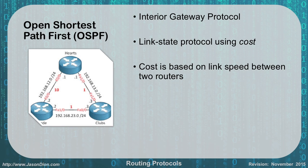Open Shortest Path First, OSPF, is our first link state protocol. It uses cost, which is determined based on the link speed between two routers. In this example, the cost is 10 between hearts and spades, and 1 between hearts and clubs, and 1 between spades and clubs. If I'm at hearts and want to get to spades, using cost: 1 plus 1 is 2, which is less than 10 — so I'd take the two-hop path through clubs all day long because it's faster. That's based on fast ethernet connections versus a regular Cat 3 ethernet connection. OSPF accounts for speed, where RIP did not.